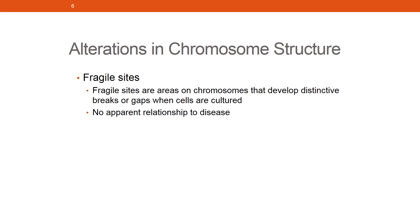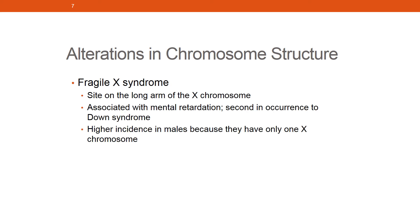To summarize: most fragile sites will not present any relation to disease — only fragile X chromosome syndrome is clinically significant. It occurs on the long arm of the X chromosome and is related to mental retardation. It is one of the most common genetic disorders, second only to Down syndrome. The key highlight is that males have a higher occurrence because they have only one X chromosome.